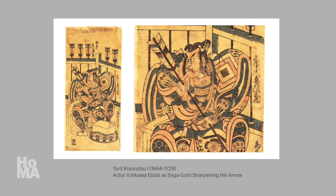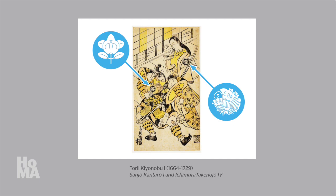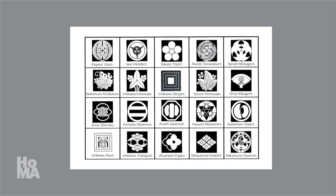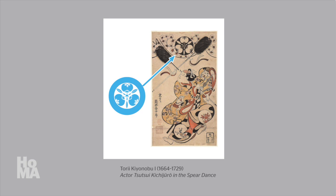Depicted here is one actor from that lineage, possibly Ichikawa Danjiro I himself. The name Ichikawa Ebizou, an alternate name for Ichikawa Danjiro, is written to the right of the actor's left shoulder. The crest for the Ichikawa family — a set of concentric squares — is also visible on the actor's left shoulder. On many kabuki portraits, the only way in which to identify the actor is through his family crest. While kabuki fans may know some of these by heart, the rest of us need to rely upon charts like this. Can you find the family crest for Ichikawa Danjiro? Each of the actor portraits by Kiyonobu that we have looked at so far have included an actor crest.